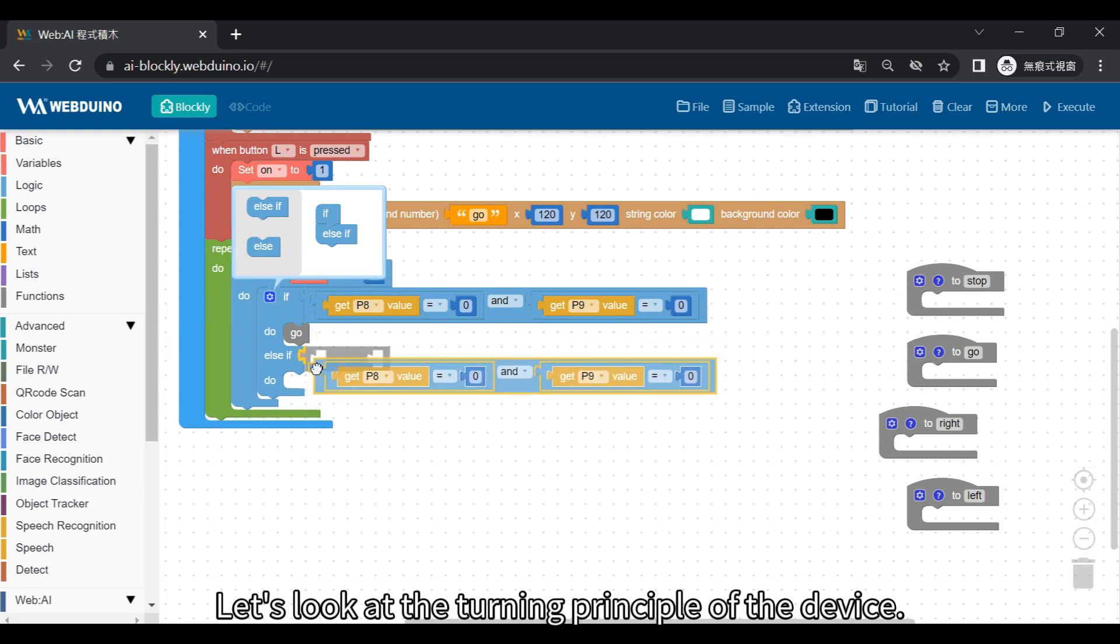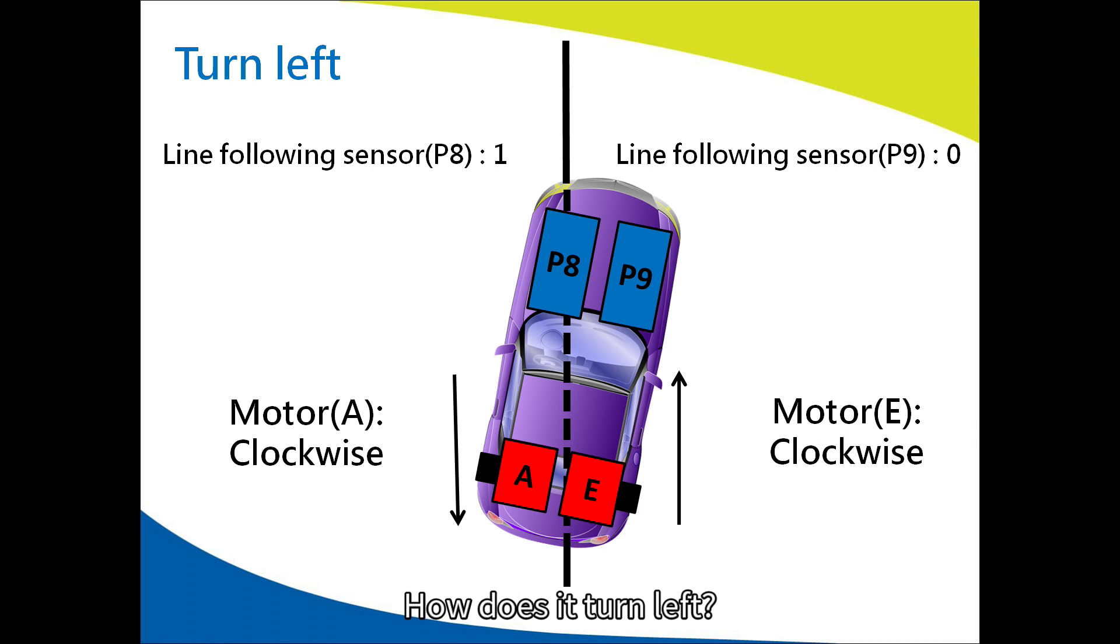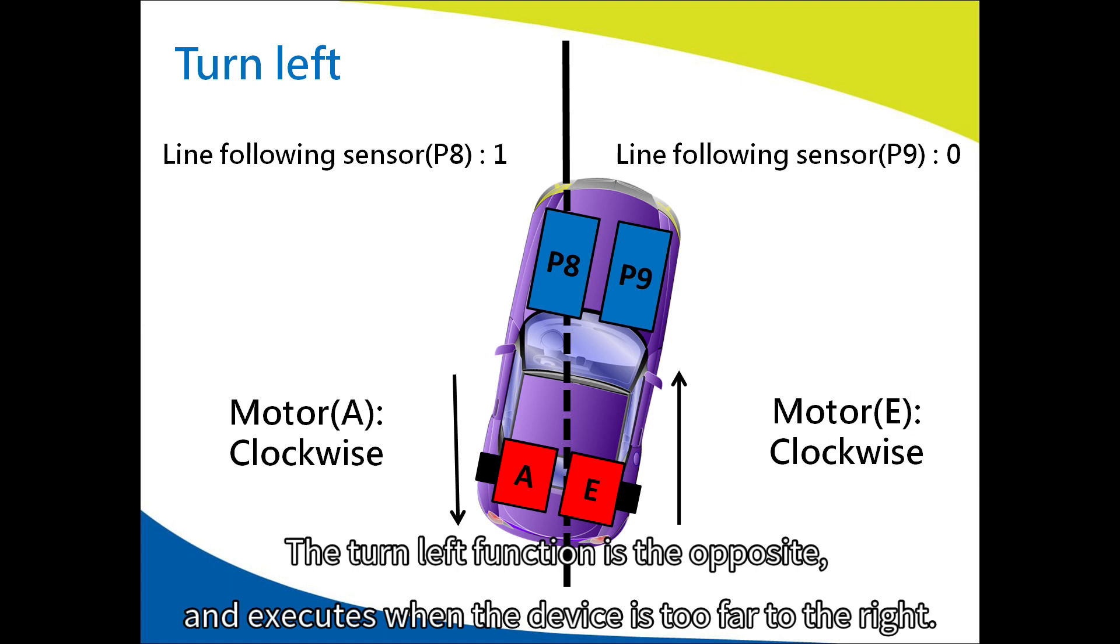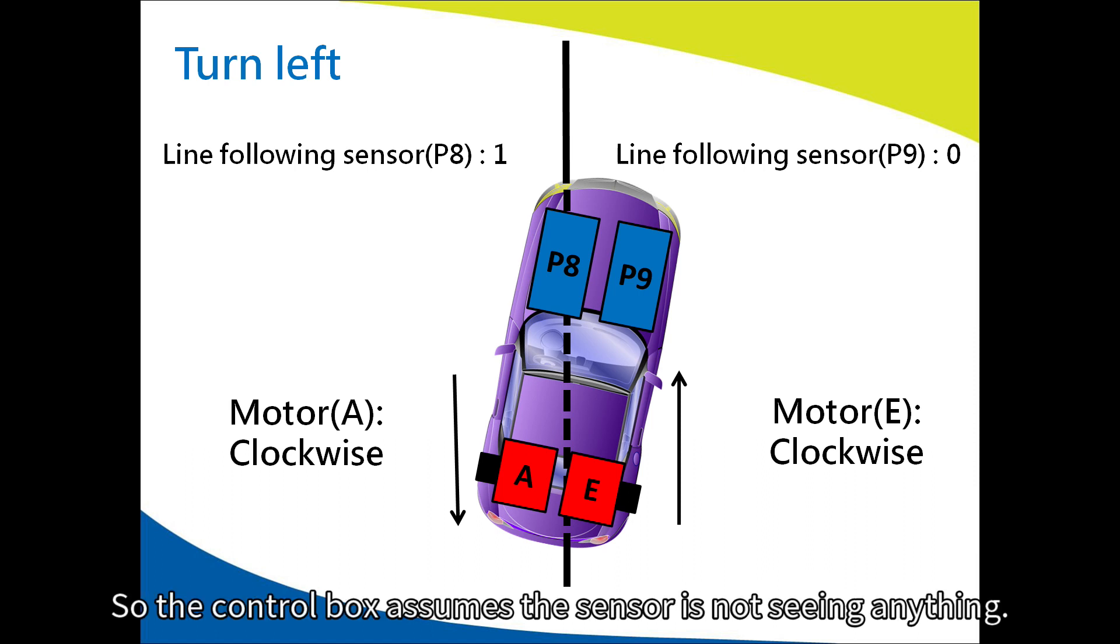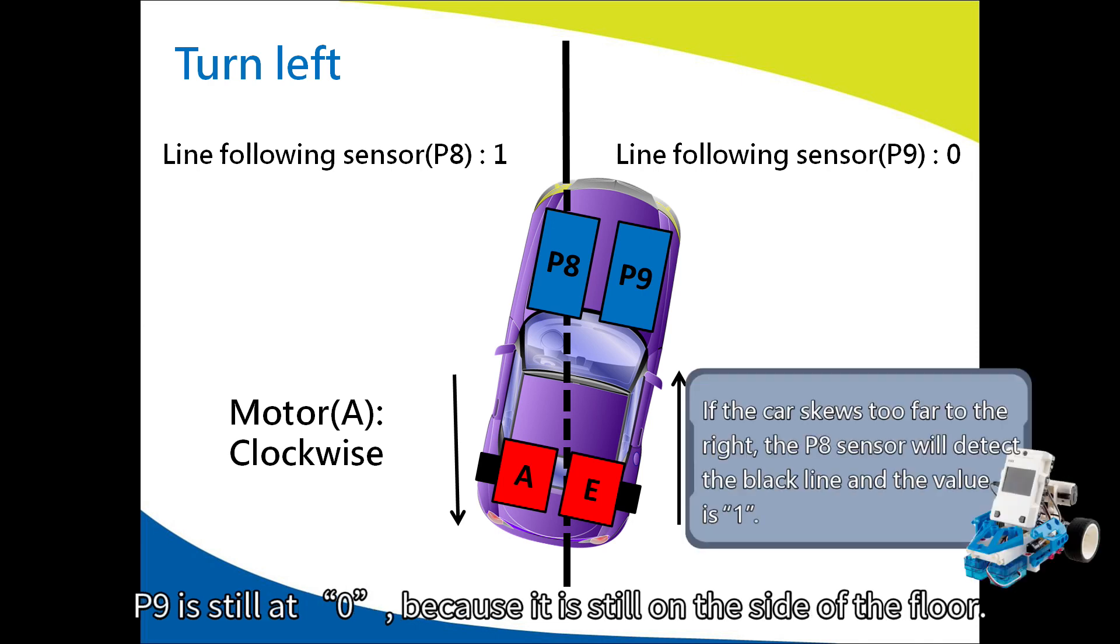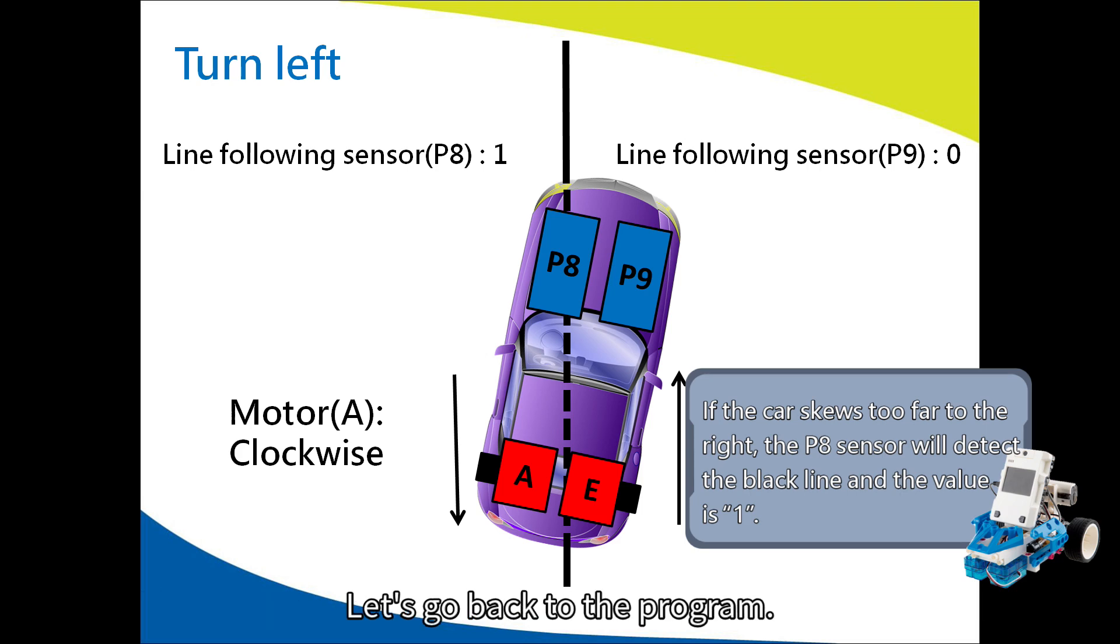For now, we'll look at the second situation, Turn Left. We can copy these blocks to save time. Let's look at the turning principle of the device. How does it turn left? If the car skews too far to the right, we need it to turn left. That means the right motor must go forward, and the left should go backward to compensate. That way it will stay on the path. The turn left function is the opposite and executes when the device is too far to the right. The P8 sensor will detect the black line. But because the line sensor can't see the color black, the P8 value is 1. So the control box assumes the sensor is not seeing anything. P9 is still at zero, because it is still on the side of the floor. Let's go back to the program.